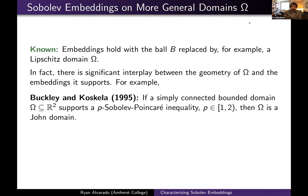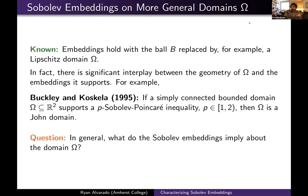I wish to mention one result in particular: a result due to Buckley and Koskola that says if you have a simply connected, bounded planar domain, and the domain satisfies a p Sobolev-Poincaré inequality with appropriate values of p, then the domain necessarily satisfies the John condition, which can be thought of as a weak corkscrew-type condition. They also have a more general result in R^n for domains satisfying a separation property.